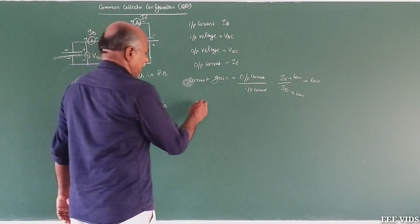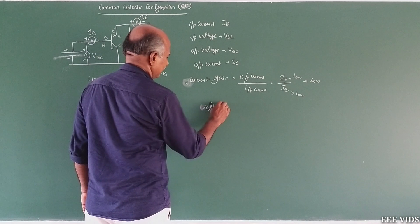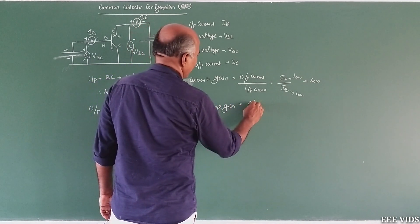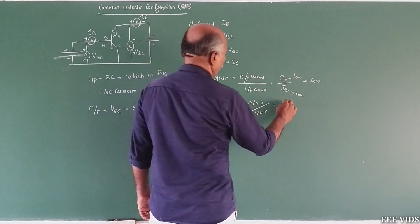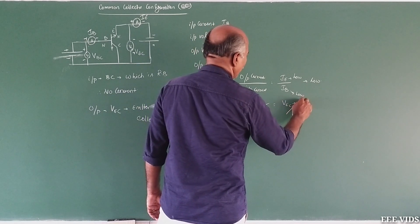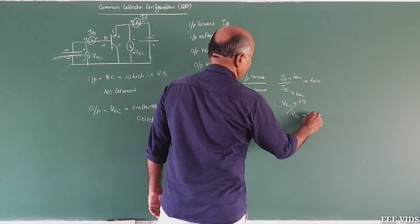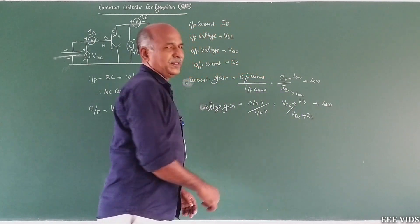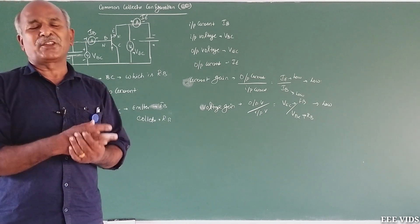The output gain and output voltage give us the voltage gain. Voltage gain is output voltage divided by input voltage, which is VEC divided by VBC. Since VEC is reverse bias and VBC is forward bias, the value is low. That is why this configuration is mostly not useful for circuits.